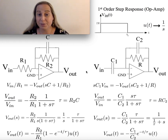I want to talk a little bit about step responses for various first order op amp circuits. In particular, what it would look like for a low pass and a high pass type version of this.